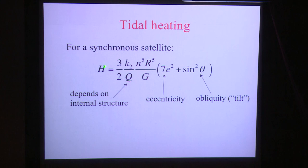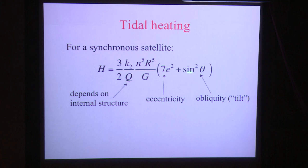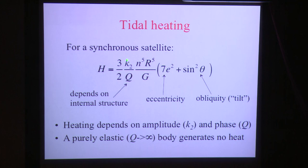Now let me talk about tidal heating. The tidal heating rate depends on the amplitude and the phase, plus constants you know: n is the mean motion, r is the radius, g is the gravitational constant. It also depends on the eccentricity and obliquity of the satellite — this is for a synchronous satellite. Because the heating rate depends on K2/Q, it depends on the internal structure. If you took a purely elastic body with infinite Q, you'd get no heating at all, regardless of the orbit.